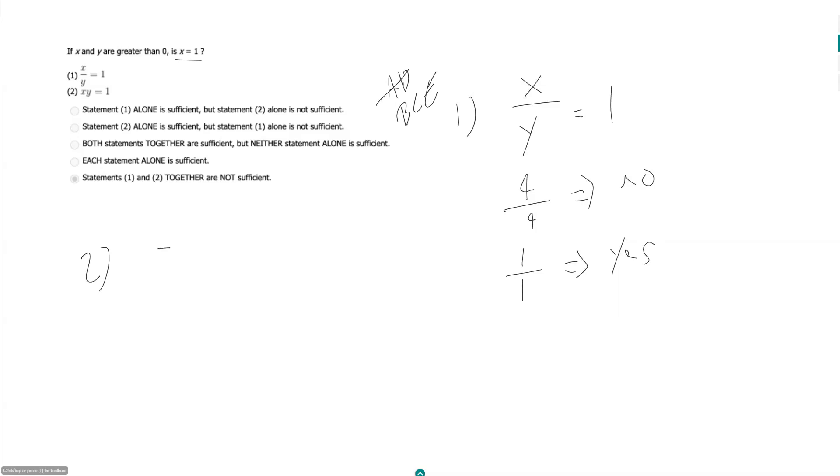So x can be 5 and y can be 1 fifth. This would be a no because x is not equal to 1. But remember, 1 is the reciprocal of 1. So 1 times 1 would also work. So we have a yes here. This statement is insufficient.